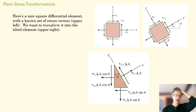So here's a nice square differential element. And we're going to really quickly look and see how we do these transformations. We want to transform this square element here into this element. In other words, we want to find out what sigma x prime is, what sigma y prime is, and what tau x prime y prime is. We know all of these.